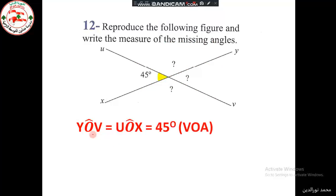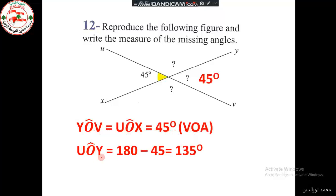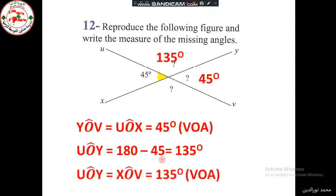To summarize: angle UOX equals 45 degrees since they are vertically opposite angles. Angle UOY equals 180 minus 45, which equals 135 degrees. And this angle also equals 135 degrees since they are vertically opposite angles.